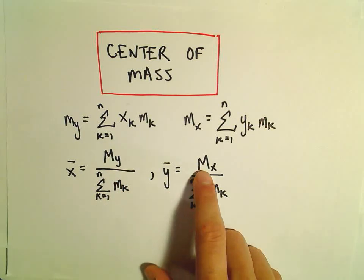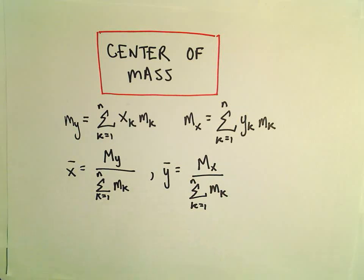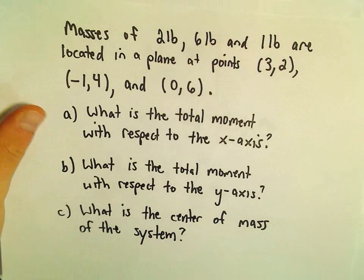To get our y-bar, we'll take the m sub x and divide by the total mass. So let's try to make some sense out of these formulas.